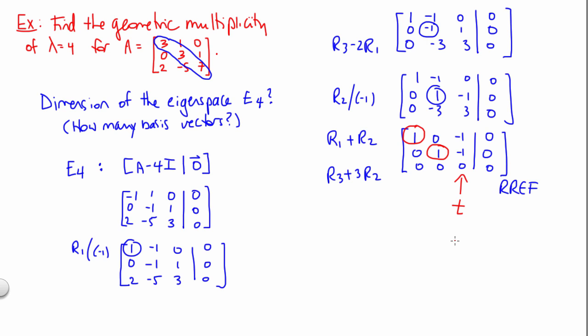Alright, so at this point, we should be able to predict the answer. There is one parameter in the solution, meaning there's going to be one basis vector for this eigenspace, meaning the geometric multiplicity of lambda equal 4 is equal to 1. So it's great to be able to make that connection at this point.